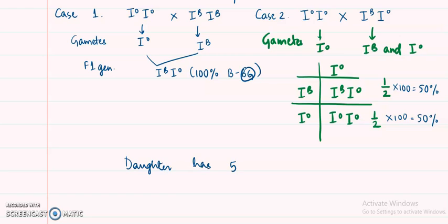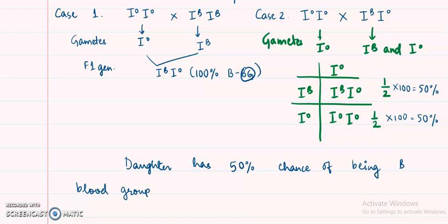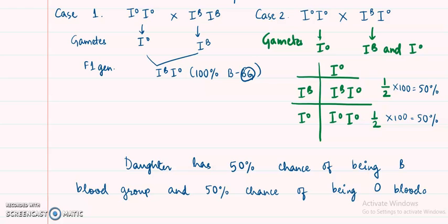In case two, the daughter has a 50% chance of being blood group B and a 50% chance of being blood group O. Remember, you must solve heredity problems in a descriptive way — if you write in short, the examiner will deduct marks.